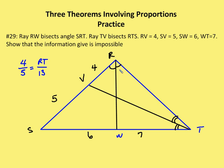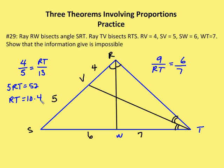Using the means-extremes product theorem on the first proportion, 5RT equals 52, so RT equals 10.4. By the angle bisector theorem on the second triangle, RS (which is 9) is to RT as 6 is to 7. Cross-multiplying gives 6RT equals 63, so RT equals 10.5. Since RT cannot equal both 10.4 and 10.5 simultaneously, this diagram is impossible.